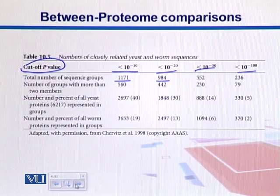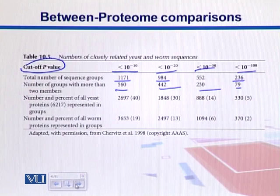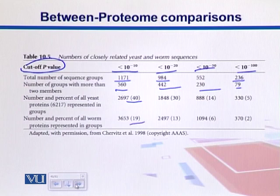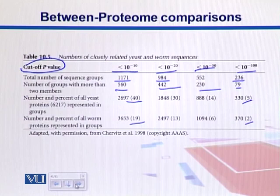At different cutoffs, we get different total numbers of groups. With stringent criteria, we have fewer orthologous groups; if we relax the criteria, we have more. The percentage of yeast genes represented in these groups varies — for example, about 40% at one criteria, 19% at another, dropping to 5% and 2% at stricter criteria like 10 to the power of minus 10. In this way, at different p-value cutoffs, we can group similar proteins with different results.